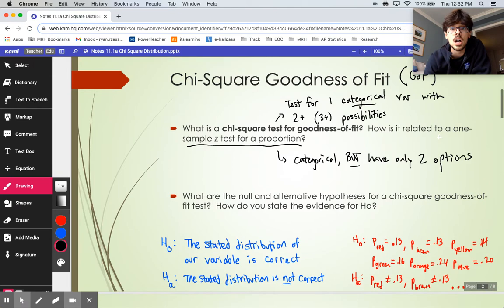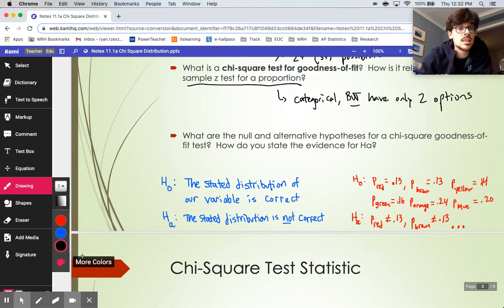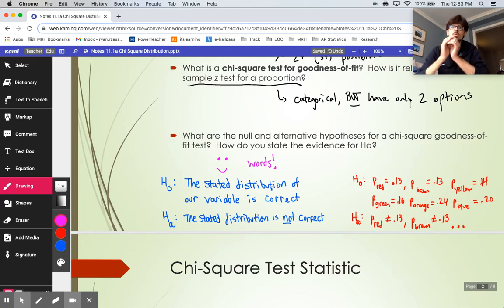The hypotheses on a chi-square problem are a bit weirder than what you usually would see. You're going to want to do it like I have written right here in blue, which actually involves doing it in words, not in symbols. So you're going to do your hypotheses for these problems in words. Your null hypothesis would say in the M&M problem, the stated distribution that M&M has on their website is still correct for modern day M&Ms. And then your alternative would be, the stated distribution on the M&M website is no longer correct.